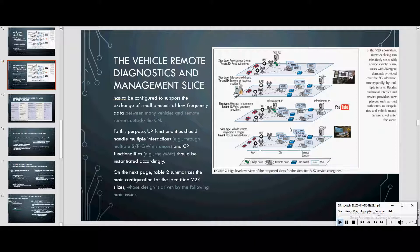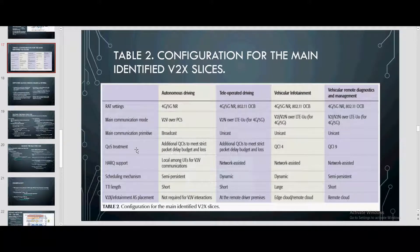To this purpose, UP functionalities should handle multiple interactions through multiple S-PGW instances, and CP functionalities such as the MME should be instantiated accordingly. Table 2 summarizes the main configuration for the identified V2X slices. For the application server placement: for the infotainment slice it can be placed in either the edge cloud or remote cloud; for the diagnostics slice it must be placed in the remote cloud. For the autonomous driving slice, no application server is needed since V2V over PC5 is the communication mode.